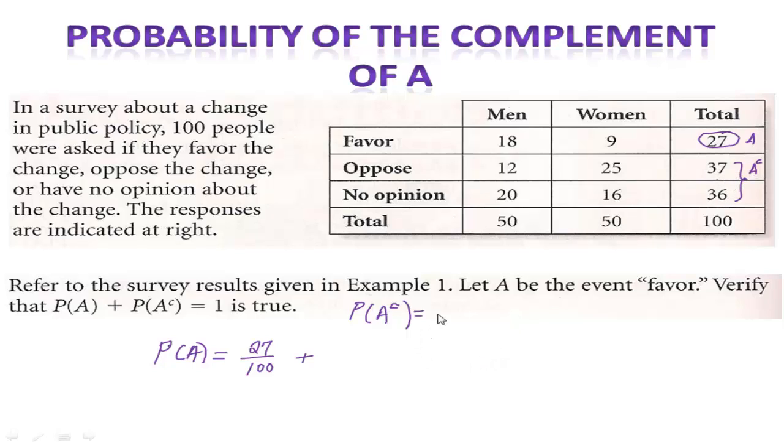So the probability of someone picked at random from this survey, and that person did not favor the policy, that would be 37 plus 36 over 100, which is 73 out of 100. That would be the complement. Now, what I'm saying here is that the probability of A plus the probability of the complement is always equal to 1. Notice here, I'll get 100 over 100, which is 1.